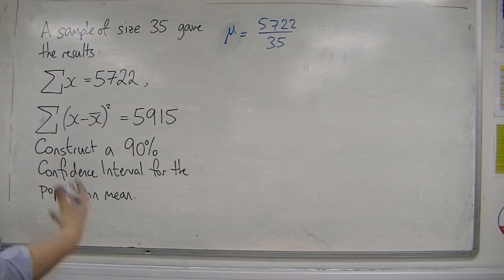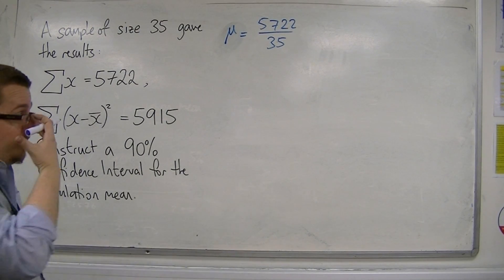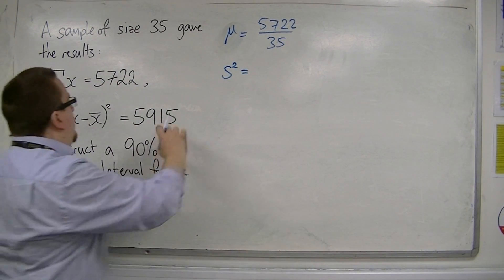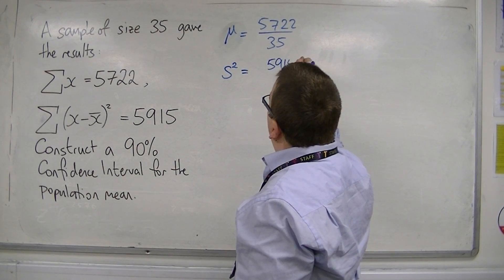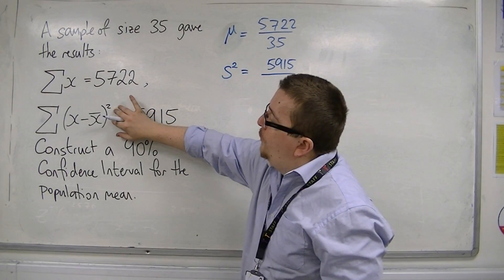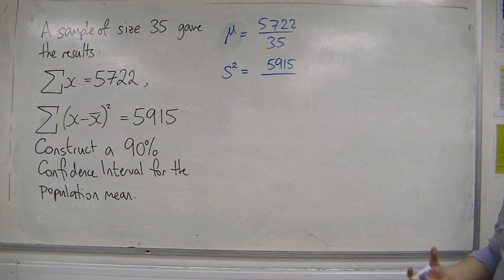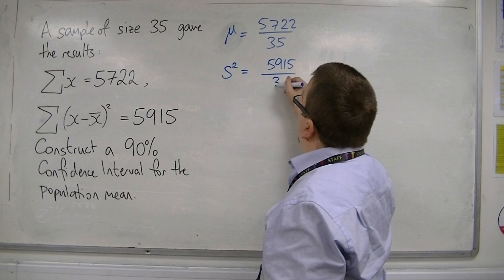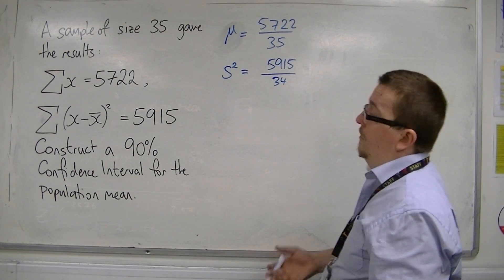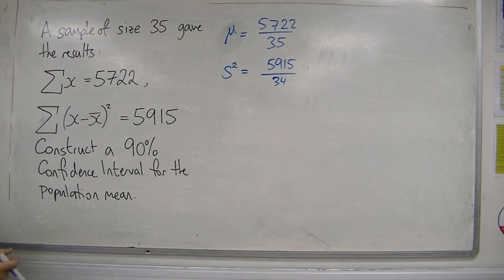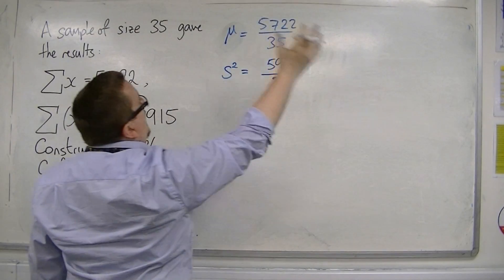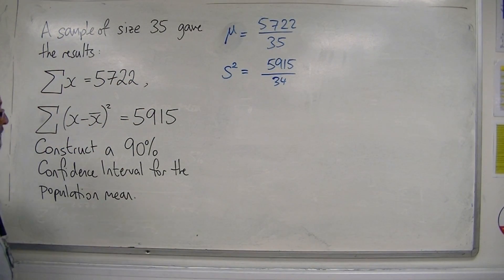As for an unbiased estimator for the variance, s squared equals 5,915 divided by n minus 1. Remember, it's this formula over n minus 1 which gives an estimate for the population variance. So I'm dividing that by 34. That's my estimate for the population variance.